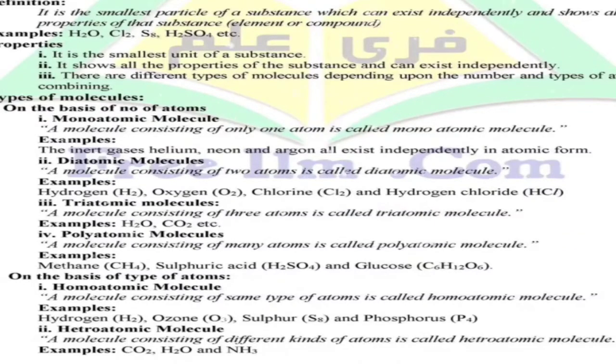What is meant by molecule? Explain the types of molecules with the help of examples. It can be asked as a long question and as a short question also. A molecule is formed by the chemical combination of atoms. It is the smallest particle of any substance which can exist independently and shows all the properties of the substance, element, or compound.